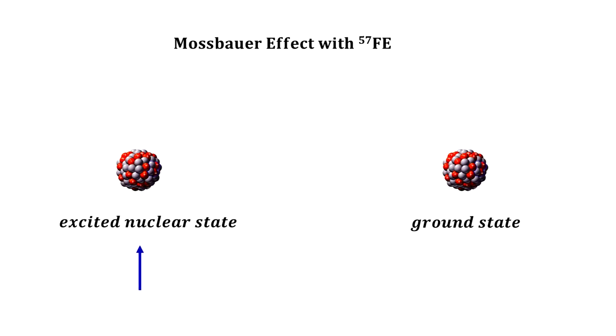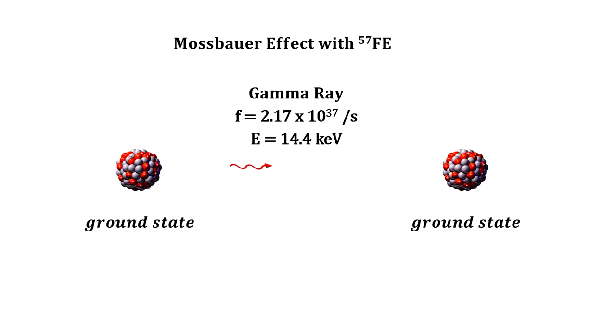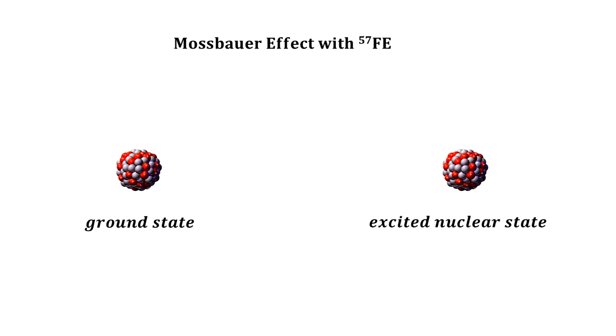Here we have an iron atom's nucleus in an excited state. When it falls to a lower energy level, a gamma ray photon carrying the energy is emitted. Once this photon enters a like atom, it will be absorbed, raising the energy level of the encountered atom's nucleus.